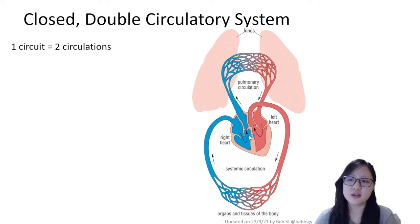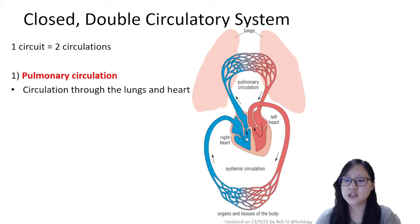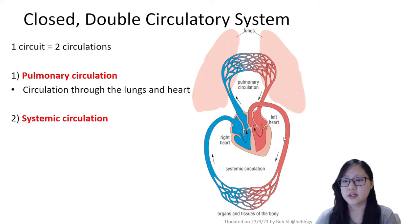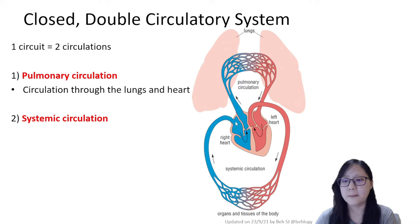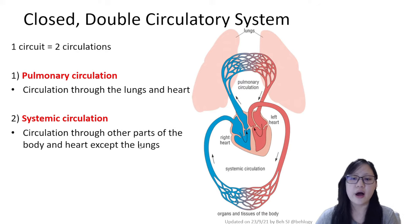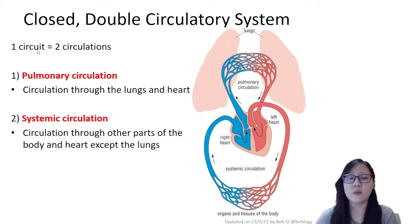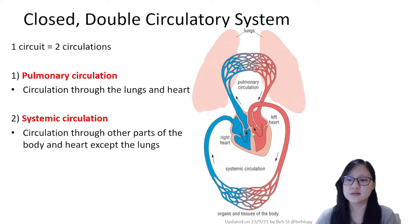One circuit consists of two circulations making one full round. The first is pulmonary circulation, where deoxygenated blood leaves the right side of the heart, goes to the lungs to be oxygenated, and returns to the heart. The second is systemic circulation, where oxygenated blood leaves the heart, goes to the rest of the body, and deoxygenated blood is transported back. These two circulations make up one complete circuit, and the blood passes through the heart twice — hence a double circulatory system.